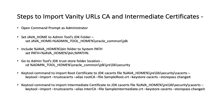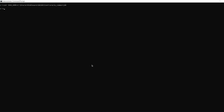Go to the Admin Tool's JDK trust store folder location. Below are the keytool commands to import the root certificate to the JDK cacerts file and the intermediate certificate to the JDK cacerts file. Let us execute the import commands in Command Prompt.